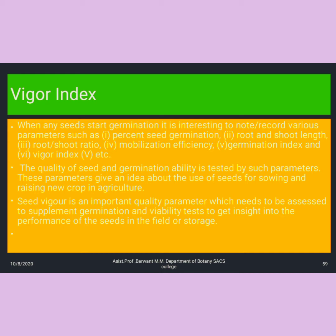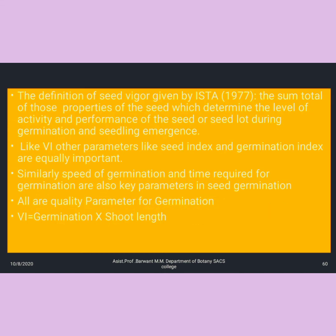Seed vigor is an important quality parameter which provides access beyond germination viability tests and gives insight into the performance of the seed in the field or in storage. The definition of seed vigor as given by the ISTA (International Seed Testing Association) in 1977: it is the sum of those properties of a seed that determine the level of activity and performance of the seed or seed lot during germination.